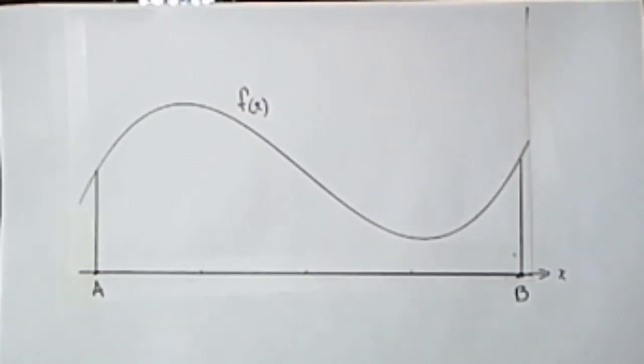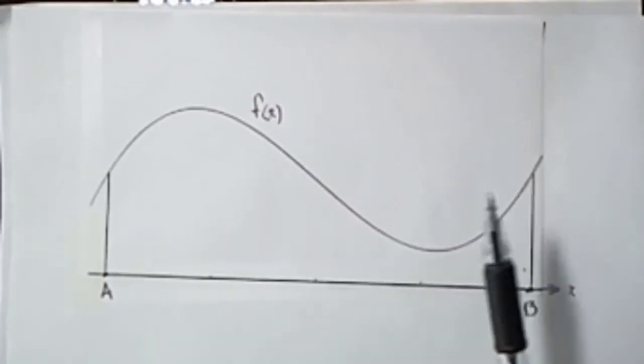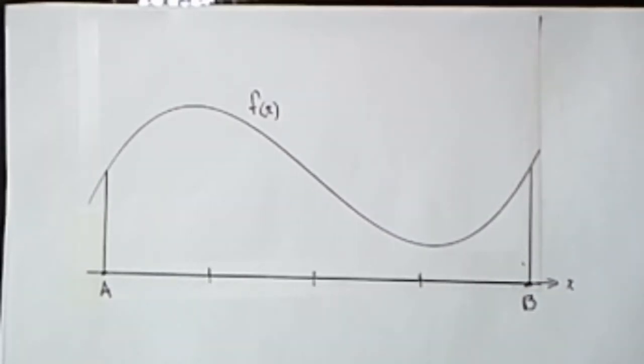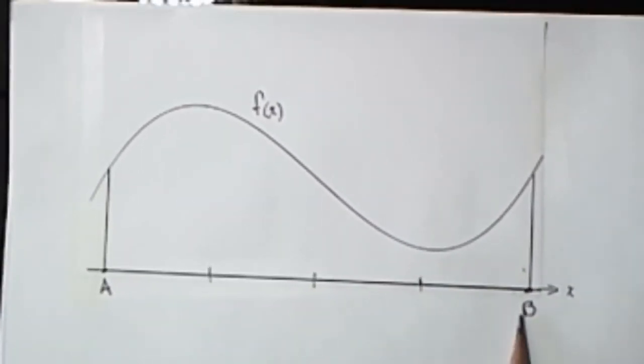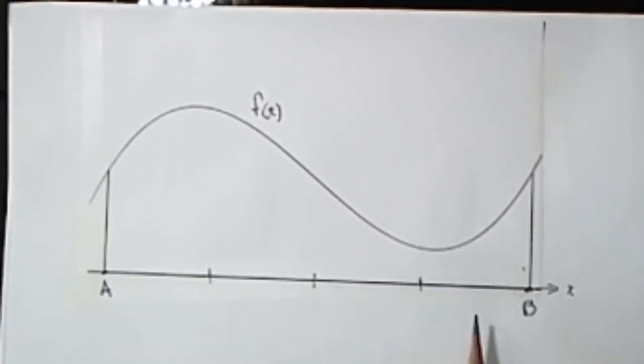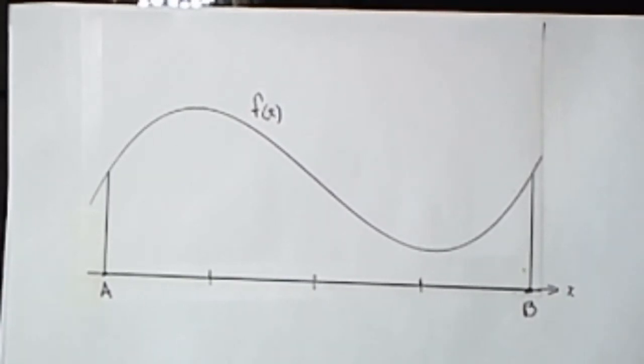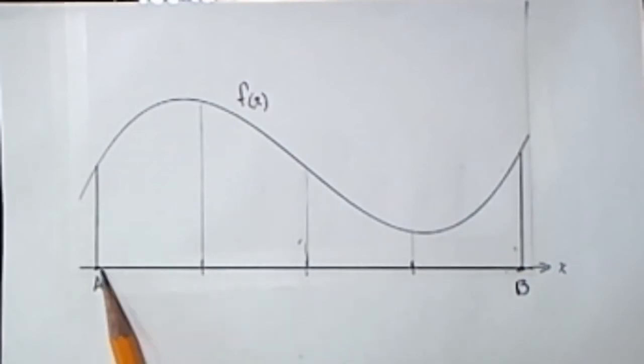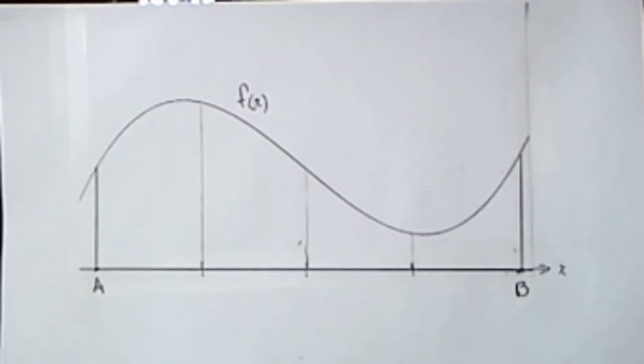We'll use a limiting process here and use something called a Riemann sum. Suppose that we cut the interval from a to b into n equal pieces. Here we've cut it into four equal pieces. On each of these sub-intervals, let's find two x-values.